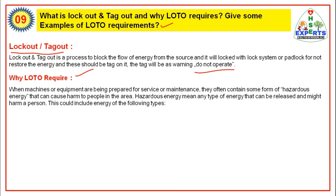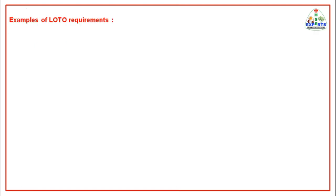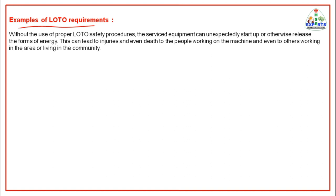Hazardous energy means any type of energy that can be released and might harm a person. This could include energy of the following types: chemical, electrical, hydraulic, mechanical, pneumatic, thermal, or other sources of energy. Without the use of proper LOTO safety procedures, serviced equipment can unexpectedly start up or otherwise release a form of energy. This can lead to injuries and even death to the people working on the machine and to others working in the area or living in the community.